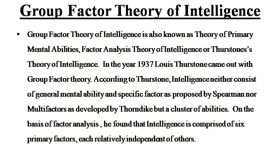Coming to the second theory in this video: group factor theory of intelligence. Group factor theory of intelligence is also known as theory of primary mental abilities, factor analysis theory of intelligence, or Thurston's theory of intelligence. In the year 1937, Louis Thurston came out with group factor theory. According to him, intelligence neither consists of general mental abilities and specific factors as proposed by Spearman, nor multi-factors as developed by Thorndike, but a cluster of abilities. On the basis of factor analysis, he found that intelligence is comprised of six primary factors, each relatively independent of others.